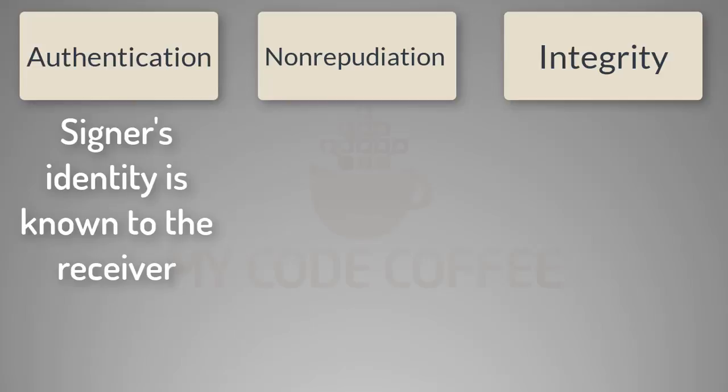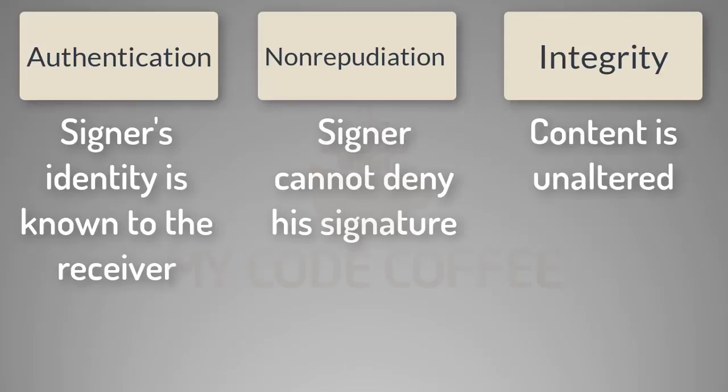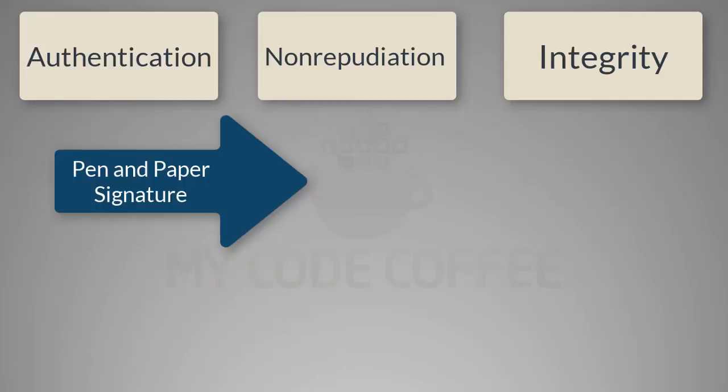Authentication means your identity is known to the receiver — this receiver can be an individual, a system, or an application; in this case that receiver is the banking system. If the bank does not recognize the signature it will reject the check. Non-repudiation means that the signer cannot deny that he has signed the check, and integrity means that the content in the check has not been altered during the course of time.